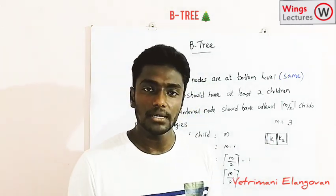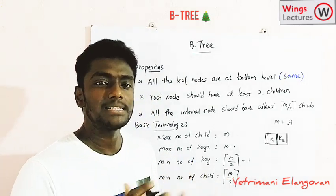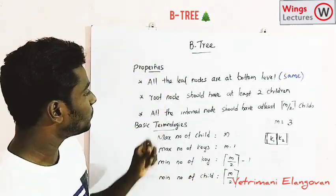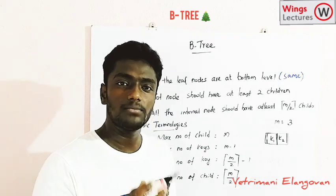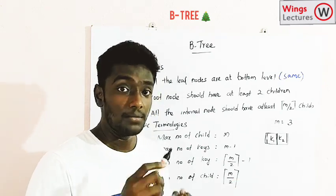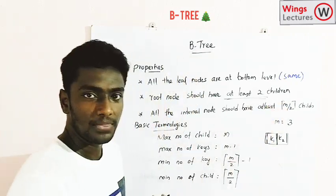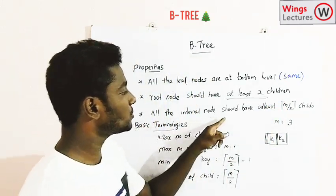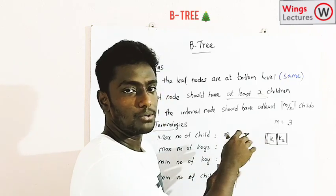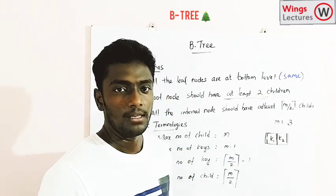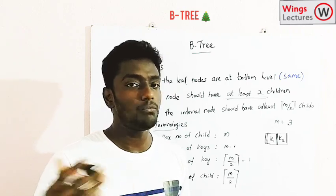The first property of B-tree is that all the leaf nodes are at the bottom level and must be at the same level. The second property is that the root node should have at least two children. In binary tree and binary search tree, a node can have zero, one, or at most two children. But in B-tree, it should have at least two children. All internal nodes should have at least m/2 children, where m is the order of the tree.